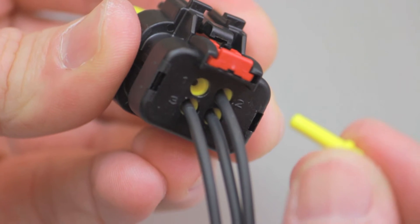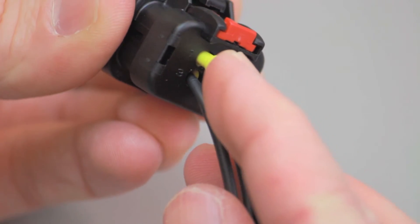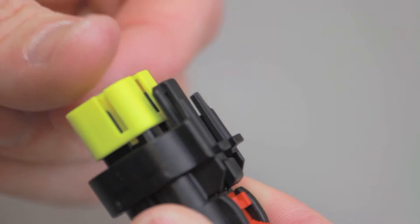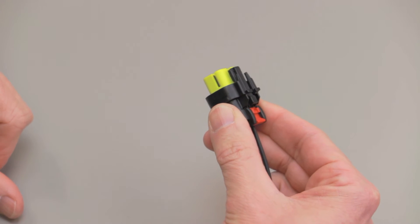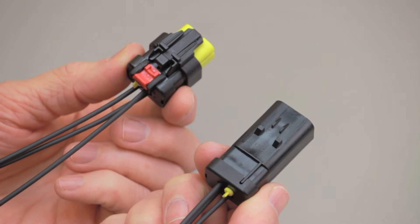Please note that if you have open cavities, they will need to be filled with appropriately sized sealing plugs. After all the contacts have been inserted, close the primary latch reinforcement by pushing it into the fully locked position. Repeat this process for both connector halves.